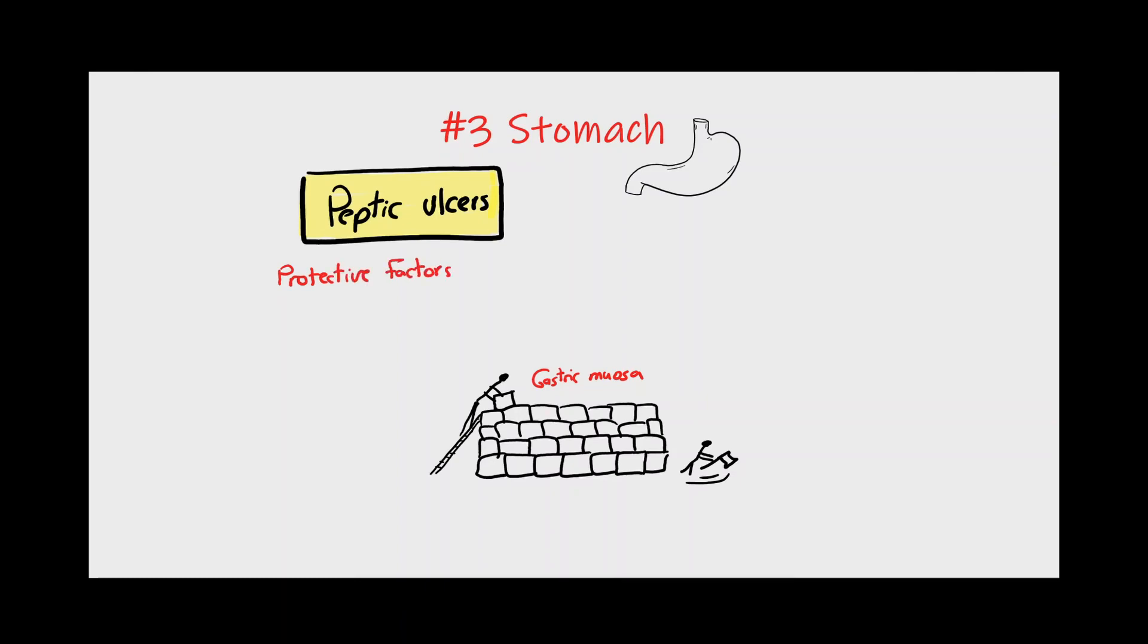The gastric mucosa is affected by several protective and destructive factors. Healthy mucosa is capable of rapid regeneration due to its rich blood supply. It also secretes a mucous layer that acts as a barrier against the destructive effect of HCL.